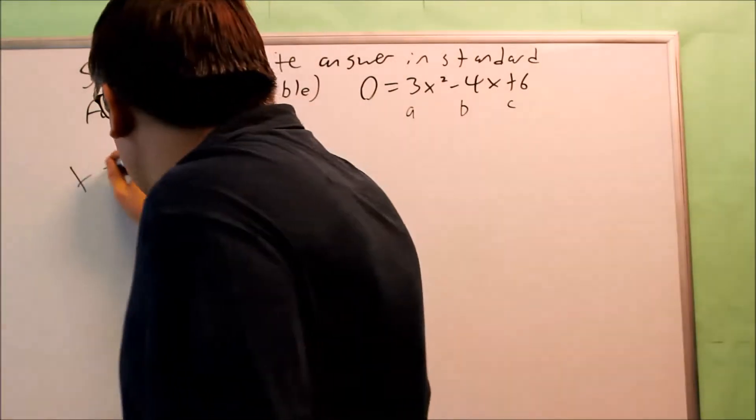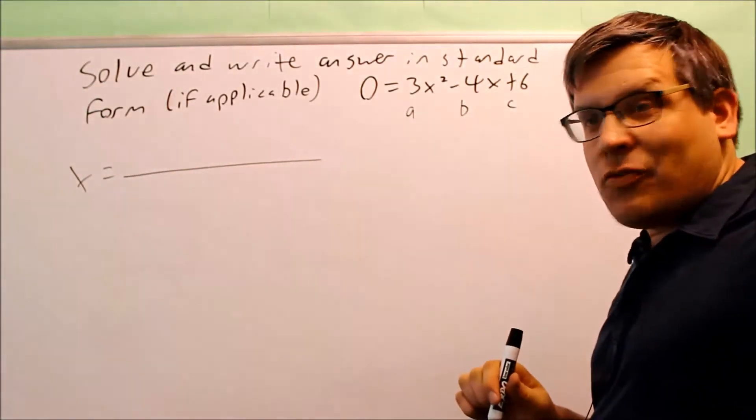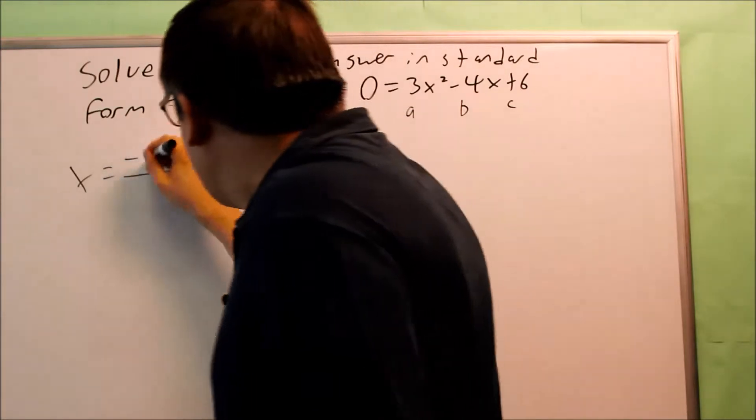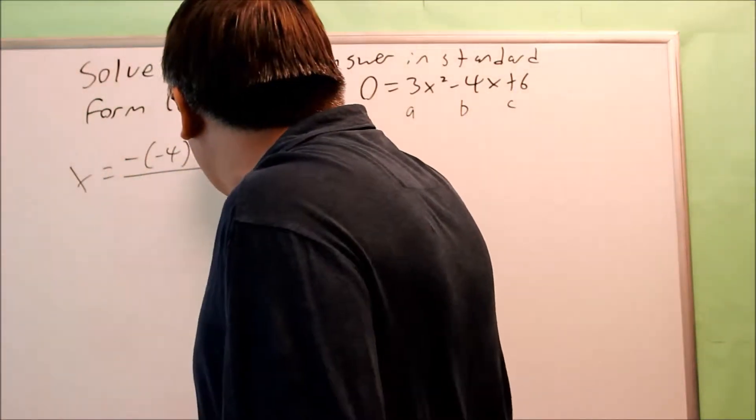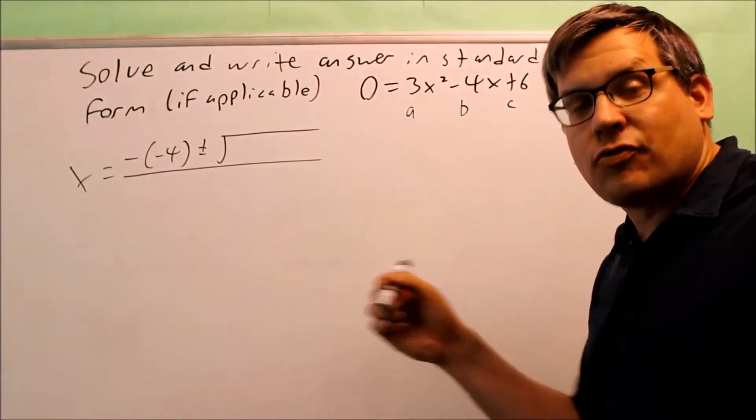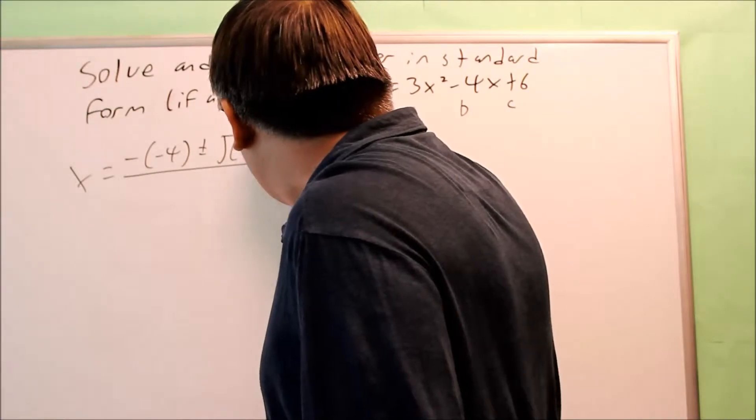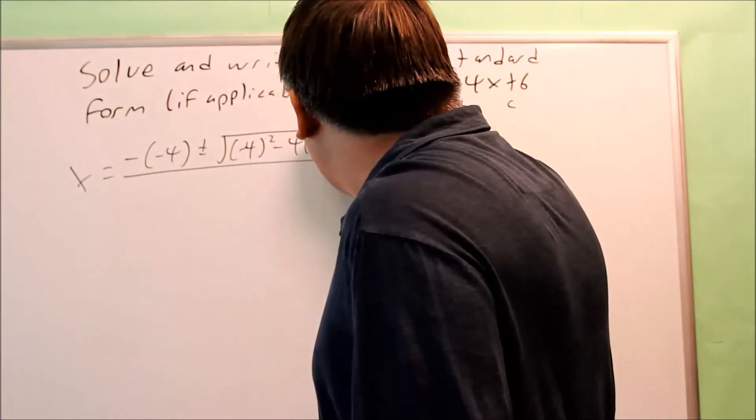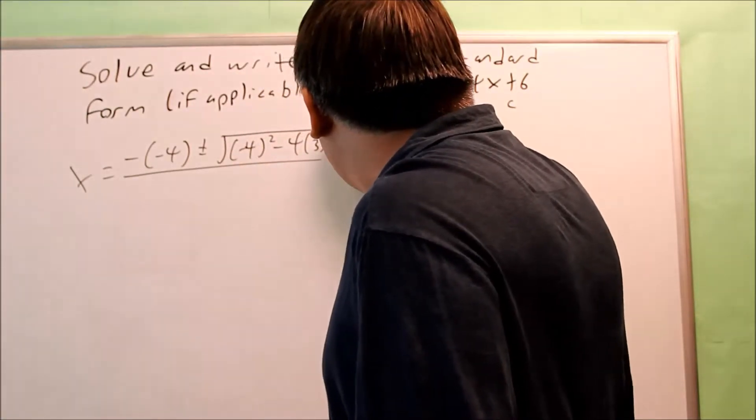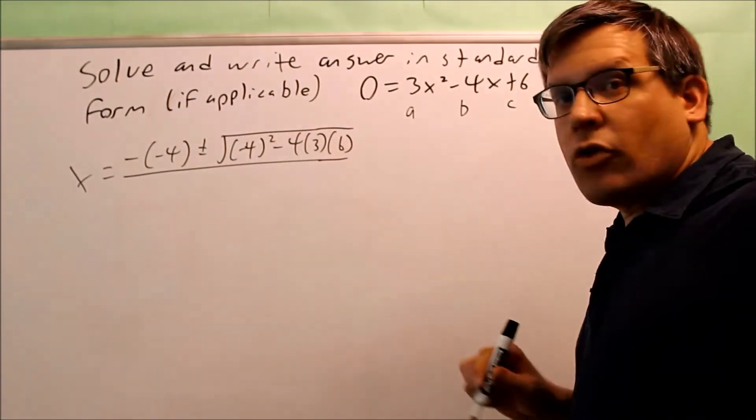the quadratic formula. So the way that works is the first part of the formula is negative b. So I have negative times negative 4, and it's plus or minus the square root of b squared minus 4ac. So b squared is negative 4 squared minus 4 times a, a is 3, and c is 6. So that's b squared minus 4ac.